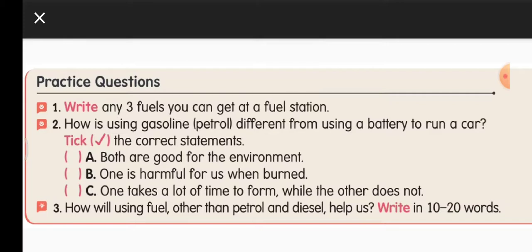Tick the correct statements about how gasoline and battery differ. 'Both are good for the environment' — no, because petrol gives out a lot of smoke. 'One is harmful for us when burned' — yes, tick this one. When petrol is burnt it gives smoke and harmful gases, whereas battery-powered vehicles do not.